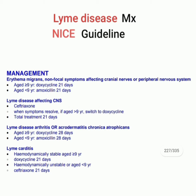Fourth: if Lyme disease is associated with carditis — if hemodynamically stable and age nine years or more, give doxycycline for 21 days. If hemodynamically unstable or age less than nine years, treat with ceftriaxone for 21 days. I am again repeating the treatment of Lyme disease according to NICE guidelines.